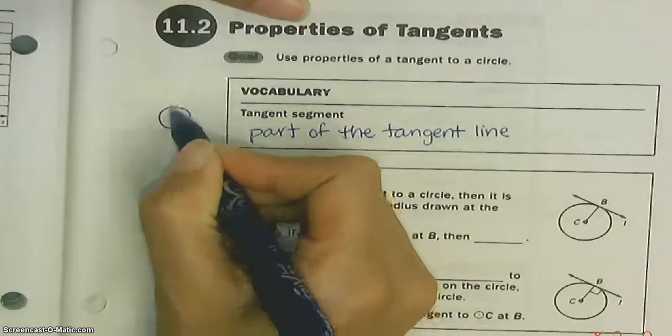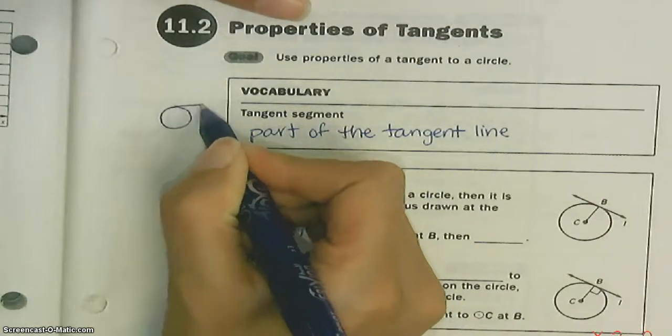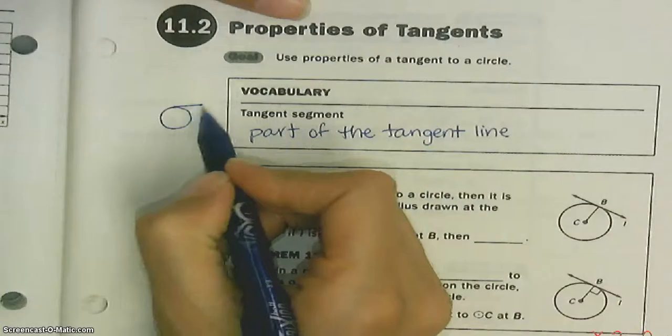If this is a circle, here's a tangent segment. Notice it stops. There's not arrows.